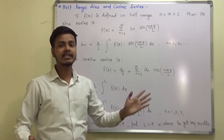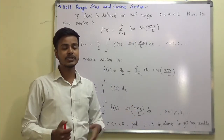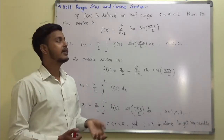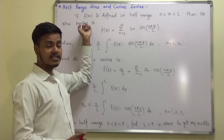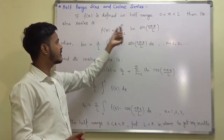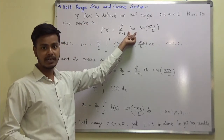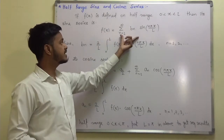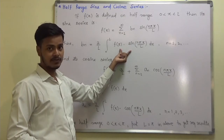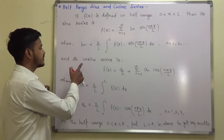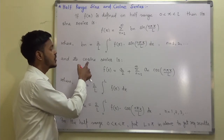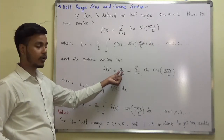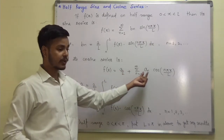You know that for the odd function also, if we have to find out the Fourier series — or the half range sine series — then we only have to find out the coefficient bₙ. The Fourier half range sine series is this, where bₙ is what we have to find out.